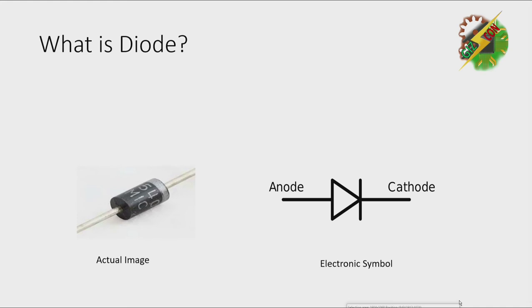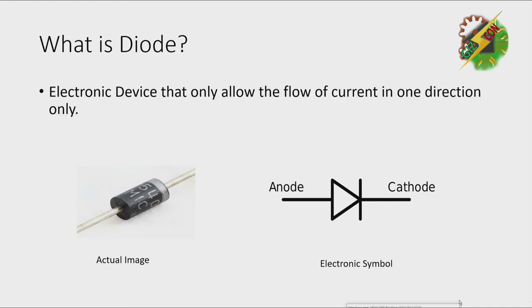First, let's define what is diode. Diode is an electronic device that only allows the flow of current in one direction.